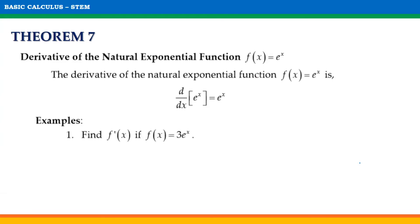Theorem number 7. For example, find f prime of x if f of x is equal to 3e raised to x. f prime of x is equal to 3 times the derivative of e raised to x. Remember that the derivative of e raised to x is equal to e raised to x. Thus, its derivative is equal to 3e raised to x.